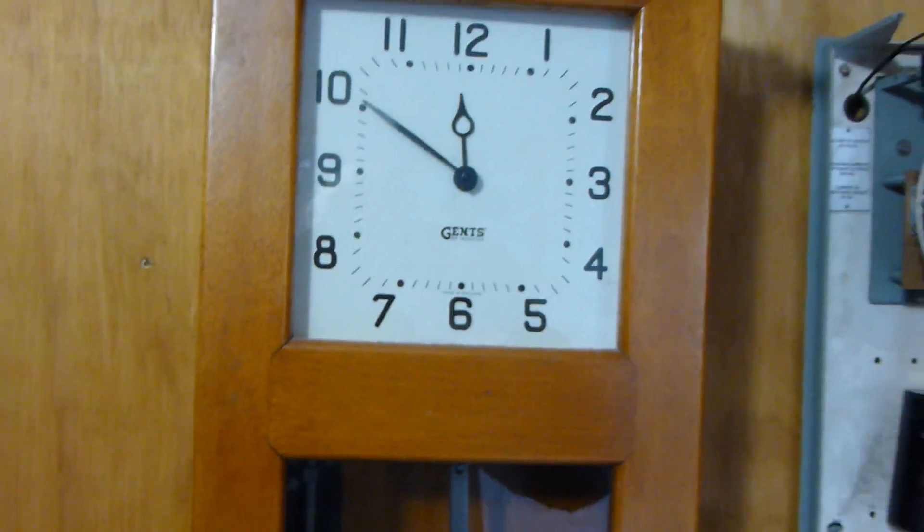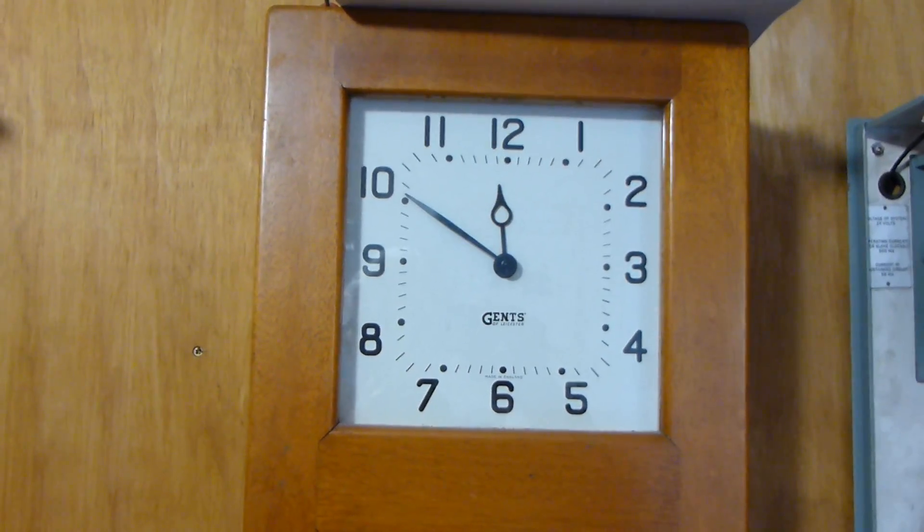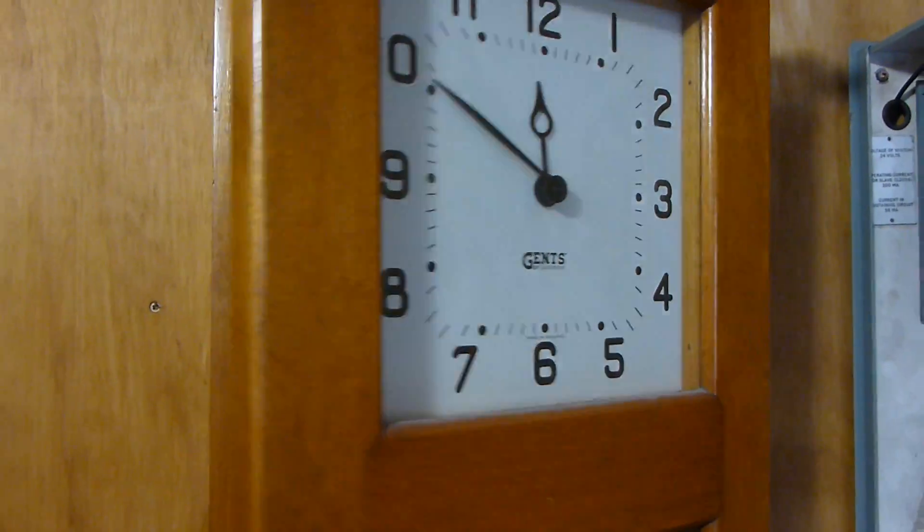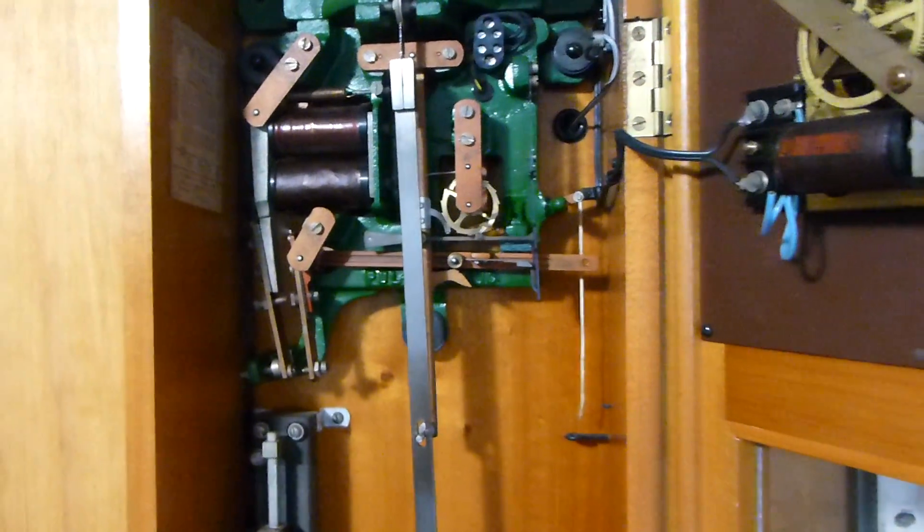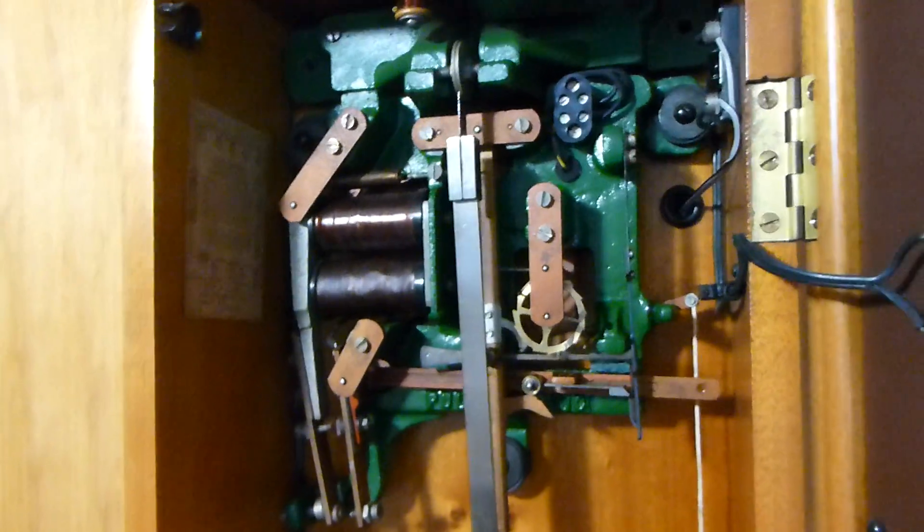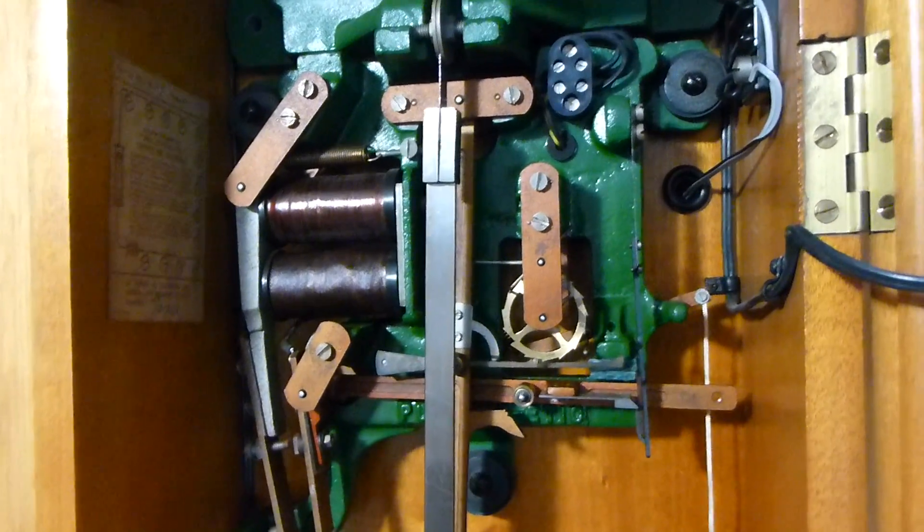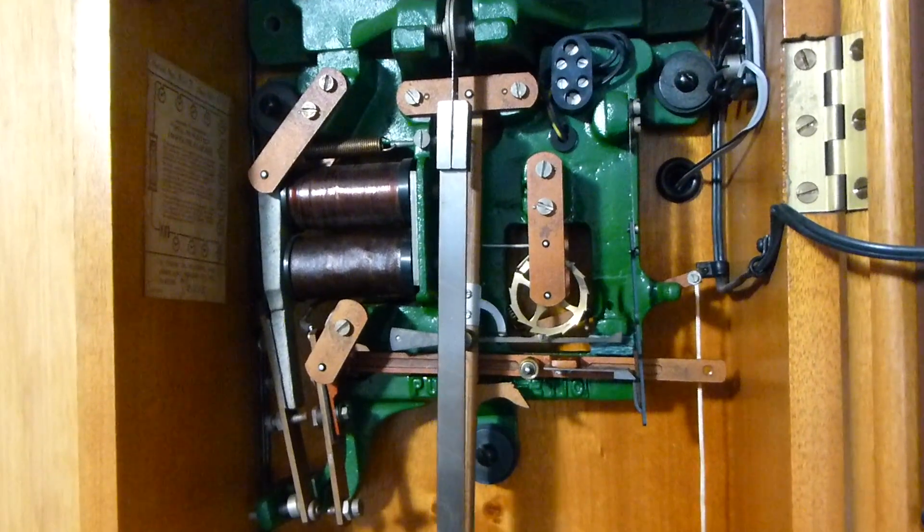And the next item of the collection is C7 Gents which is quite a common clock in New Zealand. Very robust heavy mechanism built like the proverbial British outhouse. Easy to get going and very reliable.